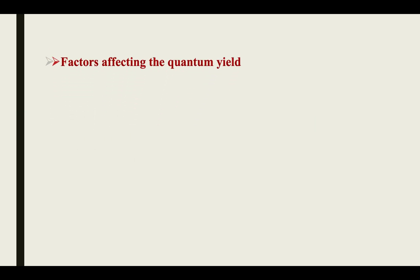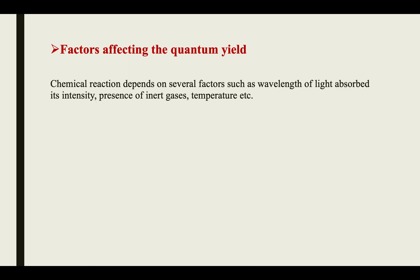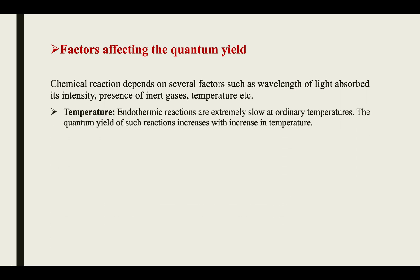Now we will see what factors affect the quantum yield. Chemical reactions depend on several factors: the wavelength of light absorbed and its intensity, the presence of inert gas, and the temperature. These are the four factors. Now we will look at the temperature factor.